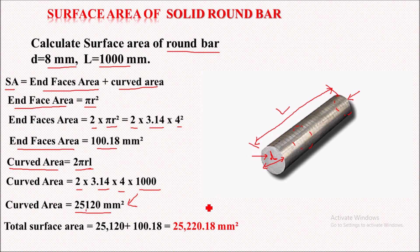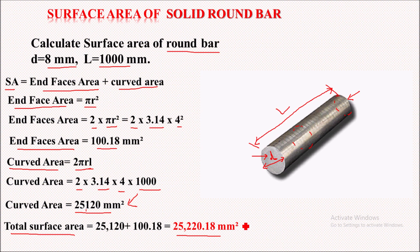Adding the end face area and the curved area gives us the total surface area of this solid round bar, which equals 25,220.48 square mm. This is the total surface area for this solid round bar, and this is the method of calculating the surface area of a solid round bar.